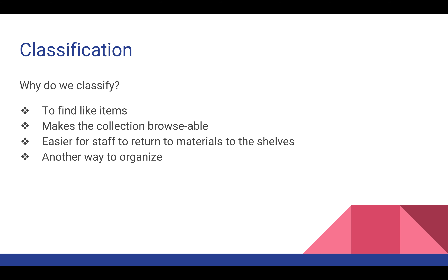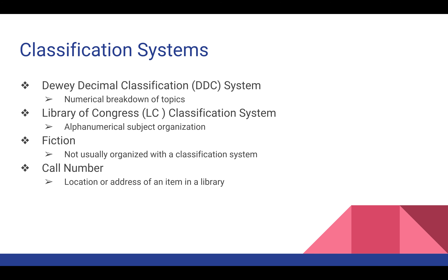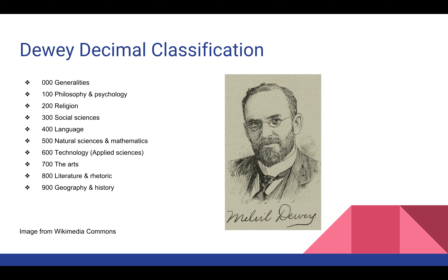Classification — why do we classify? We like to organize things and classifying helps us do that. It helps us find things, makes our collection and OPAC much more browsable, and makes it easier for staff to work and know where things go so things can circulate better. The most commonly used classification is the Dewey Decimal System, a numerical breakdown by topic. Library of Congress classification is also used but more commonly in academic, medical, or special libraries. Call numbers are kind of the address of the book in your library or catalog.